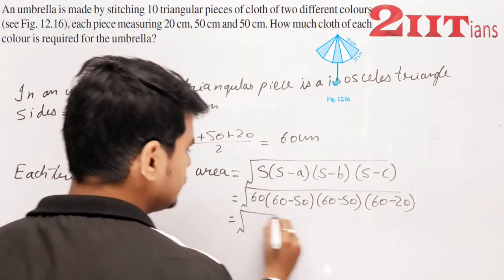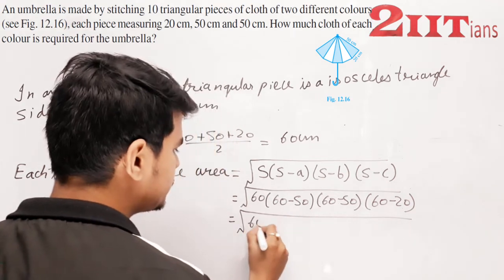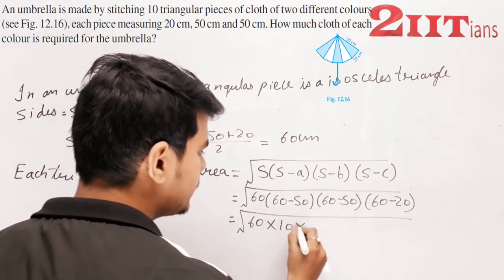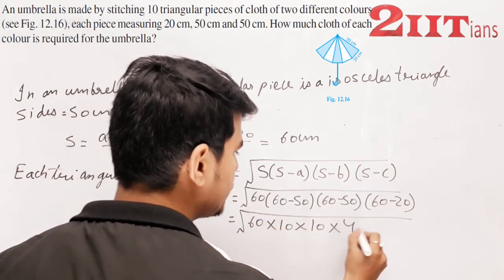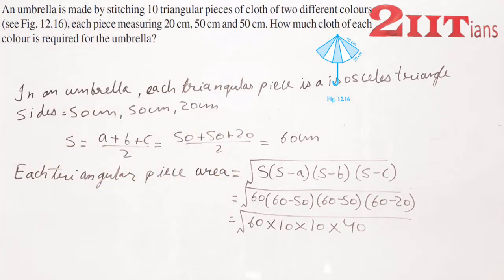= √(60×10×10×40) = 200√6. यह हो जाएगा 200√6, यह हमारा area आ गया.